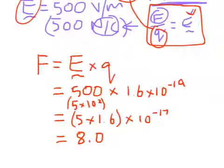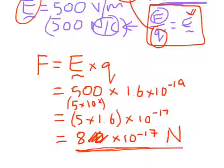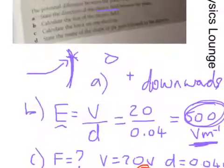So 8.0 plus 2 significant figures, since most everything else in there is. Actually, 4 centimeters is one significant figure, so let's just make that one significant figure, 8 times 10 to the minus 17, and we're almost there. Units: newtons. Remember the question is asking the force experienced on one electron. That's a very small force, but an electron is very small, so that's more than enough to steer it where you want it. And the final question is state the name of the shape of the path followed by the electron.